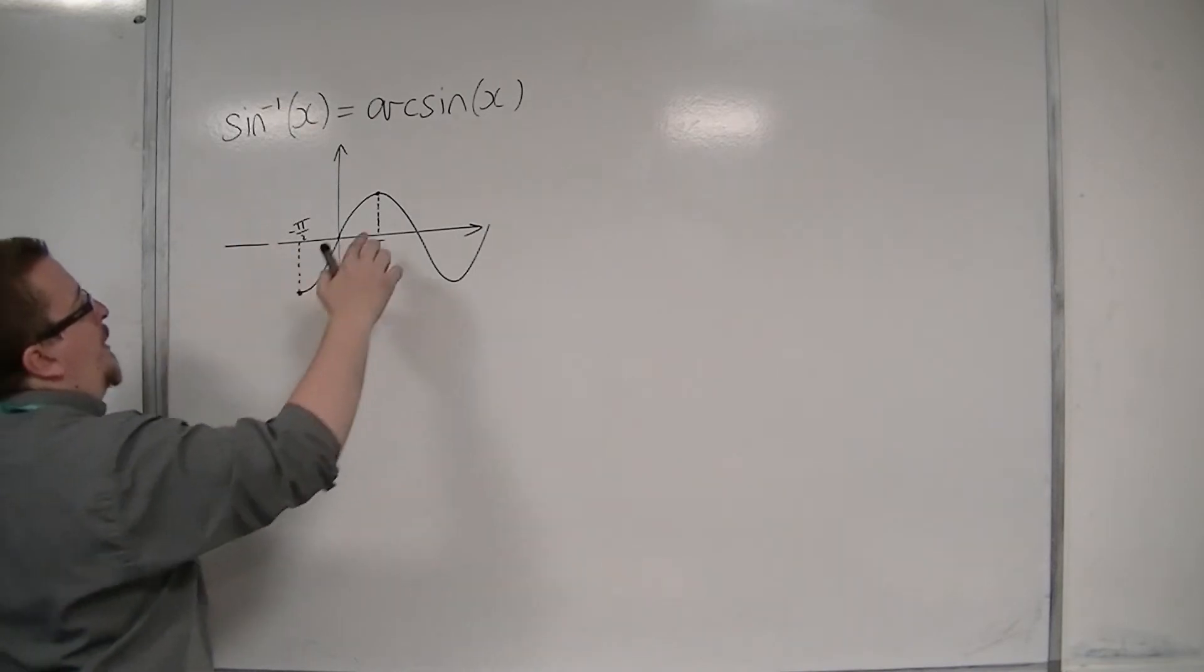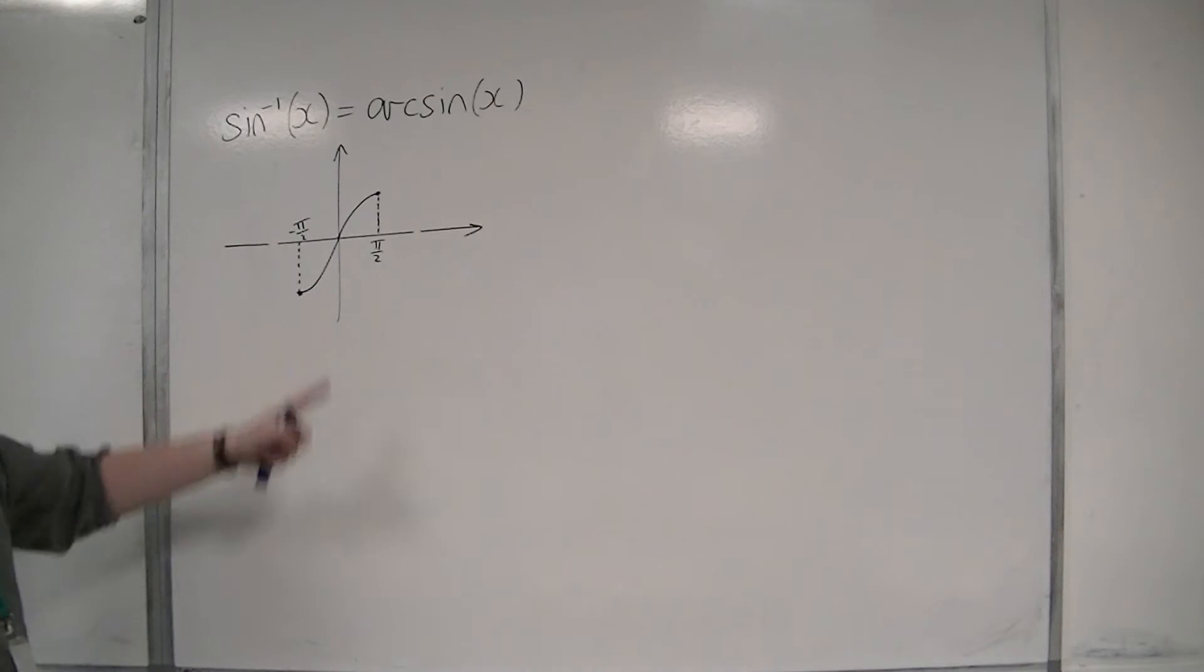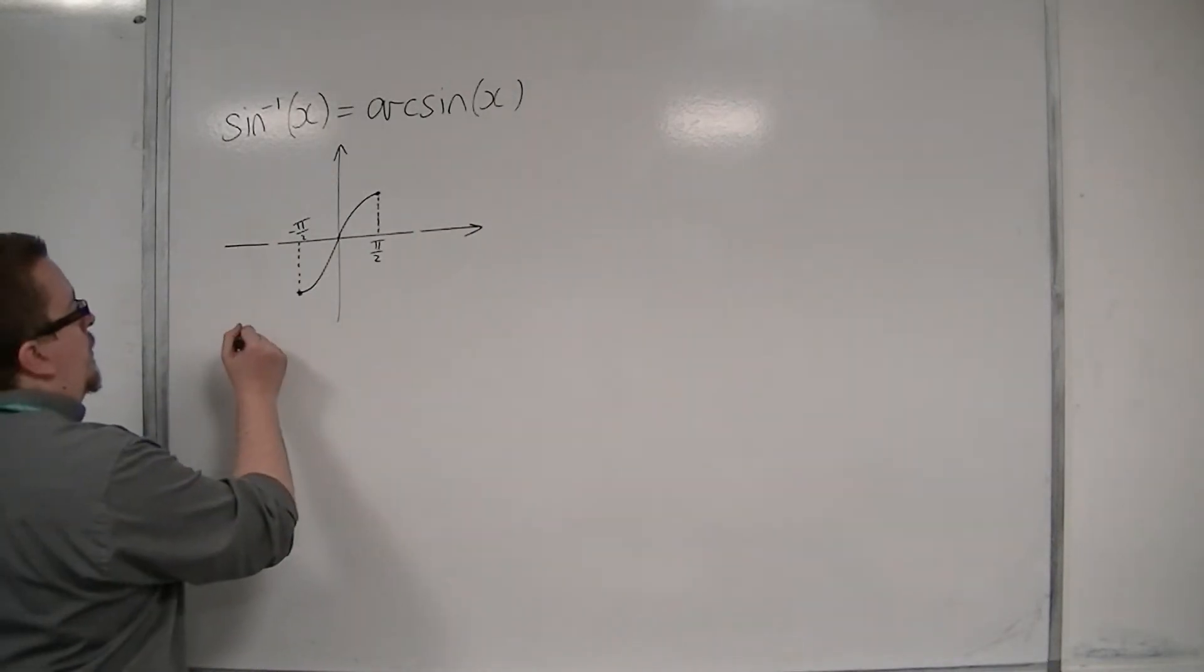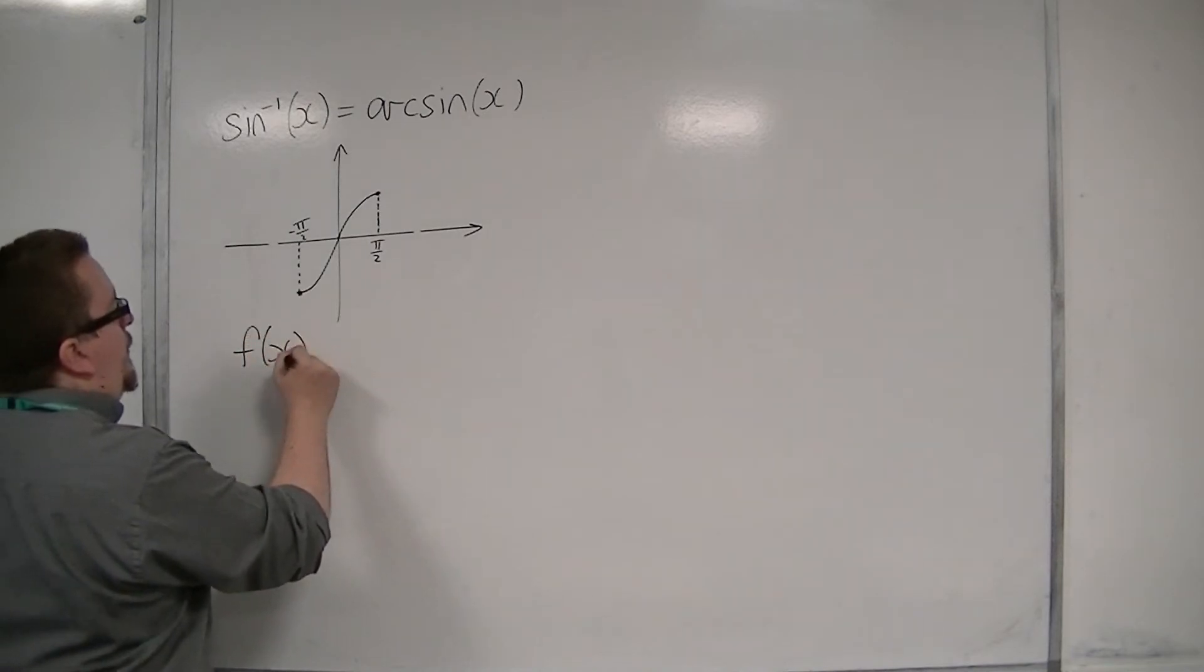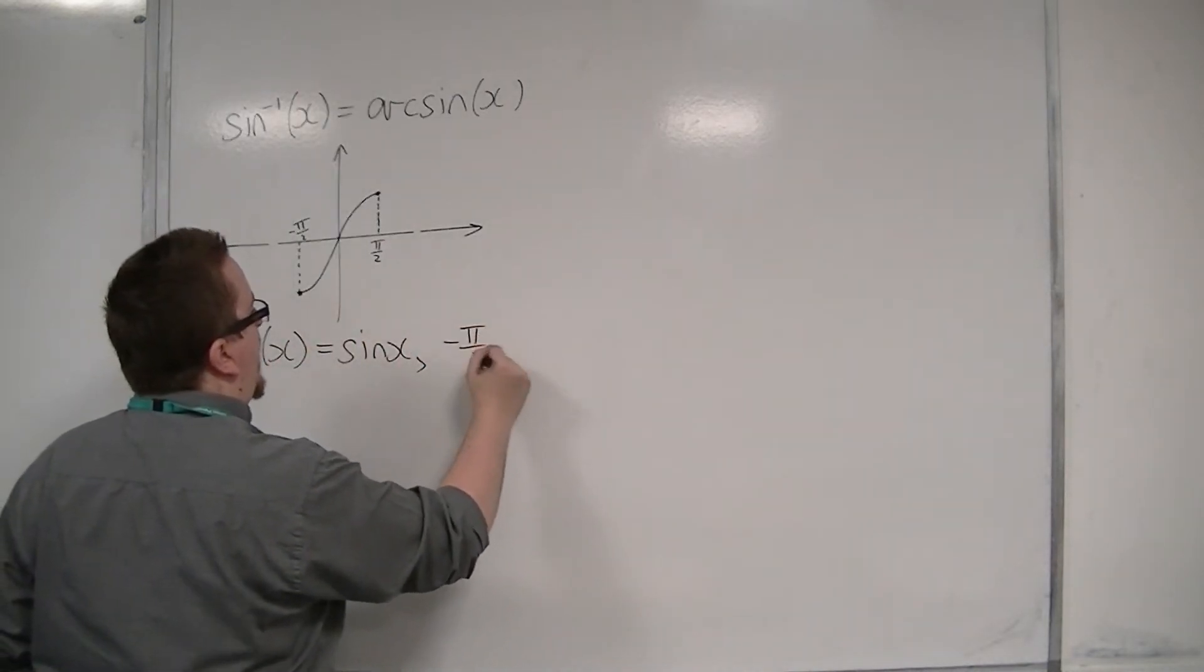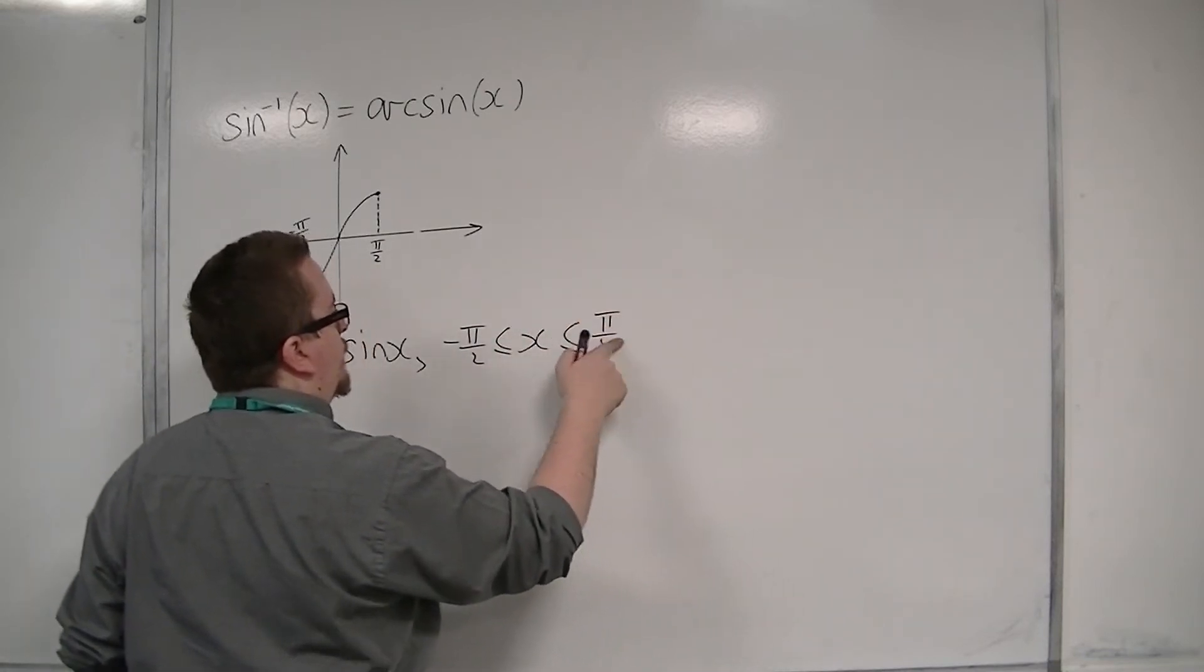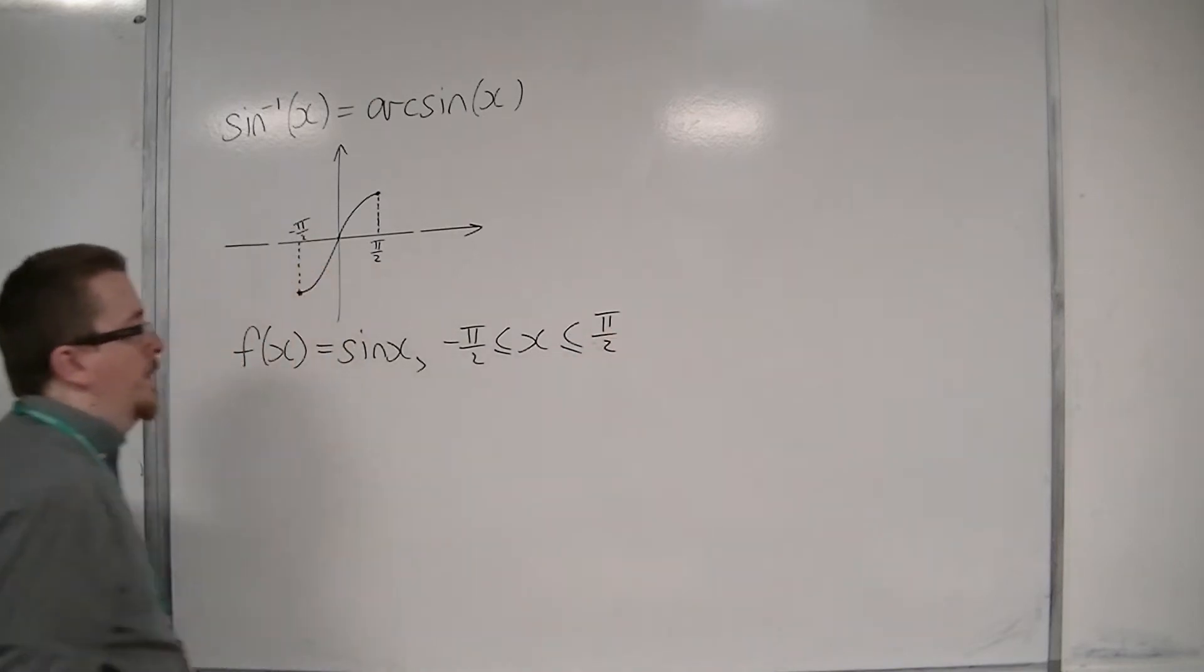So I'm going to get rid of that part, and that part, and I'm going to be left with this. This is f(x) = sin(x), where we've restricted the domain to -π/2 ≤ x ≤ π/2.